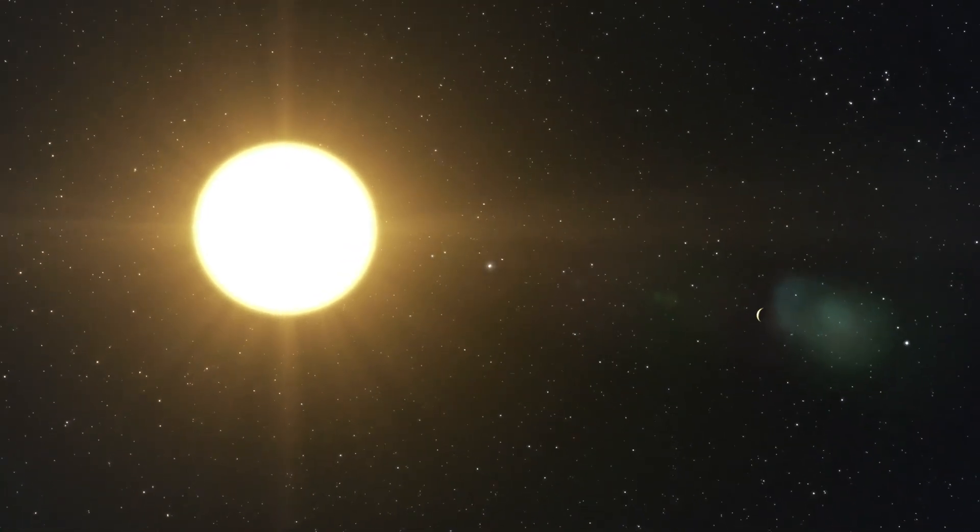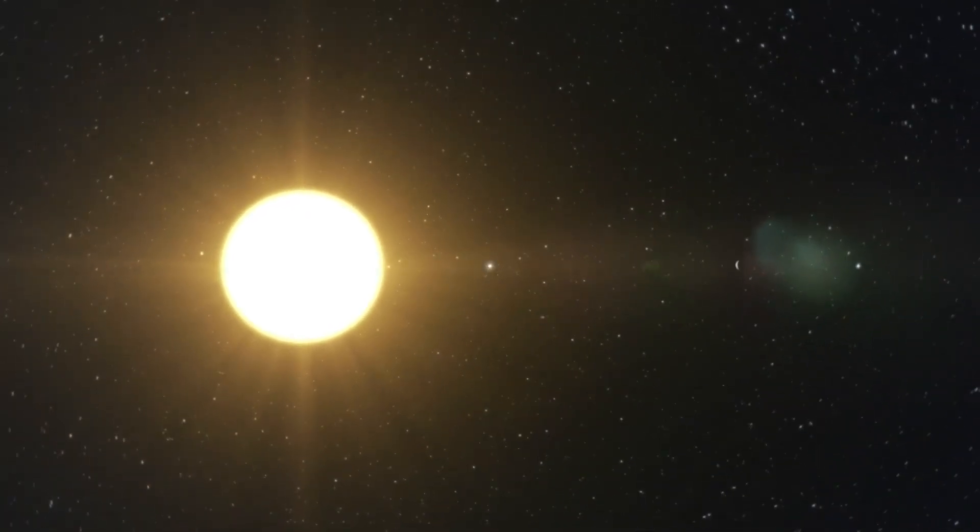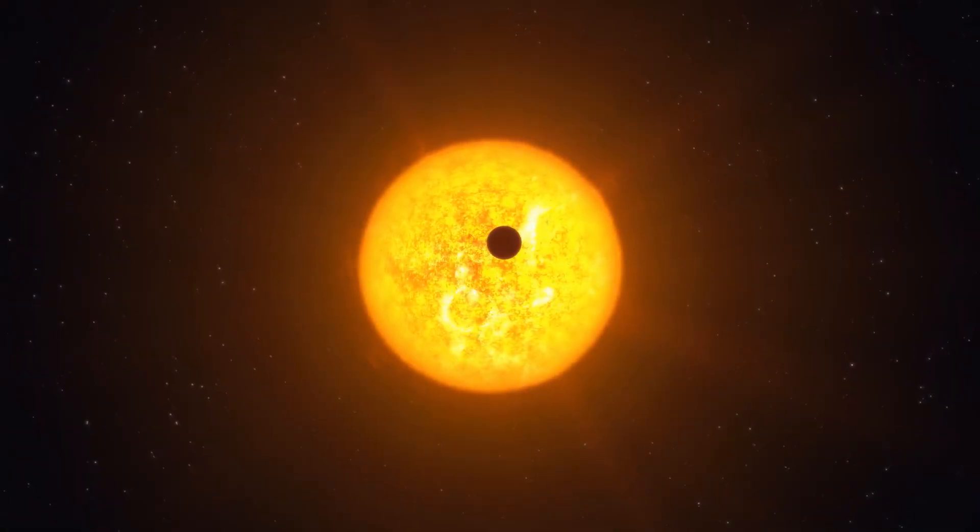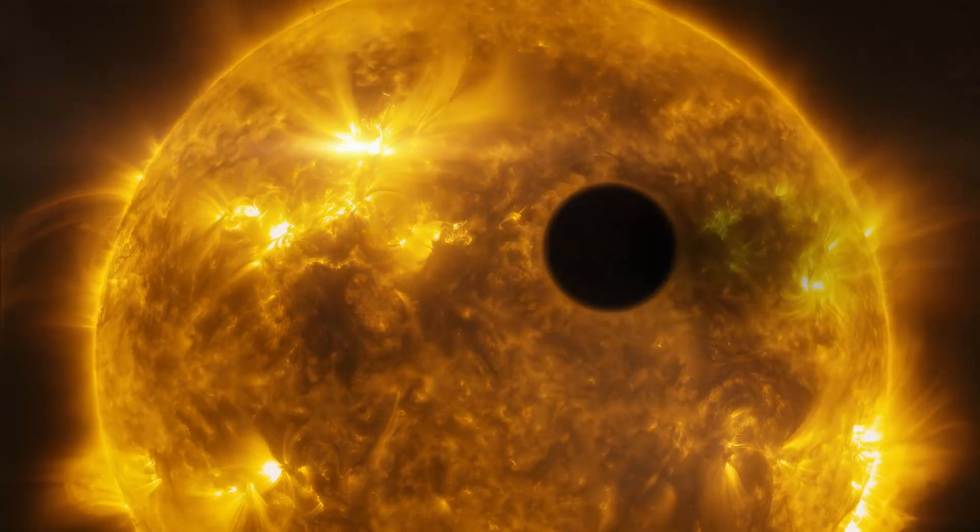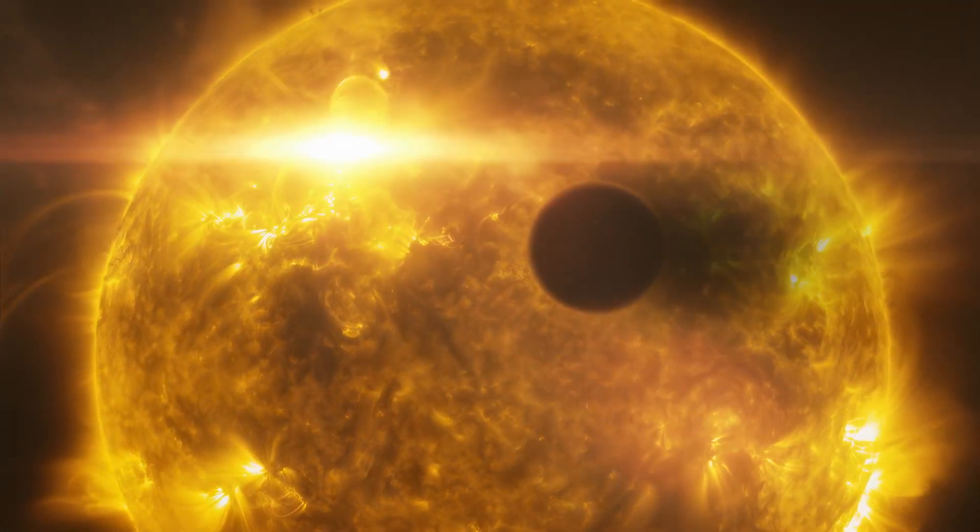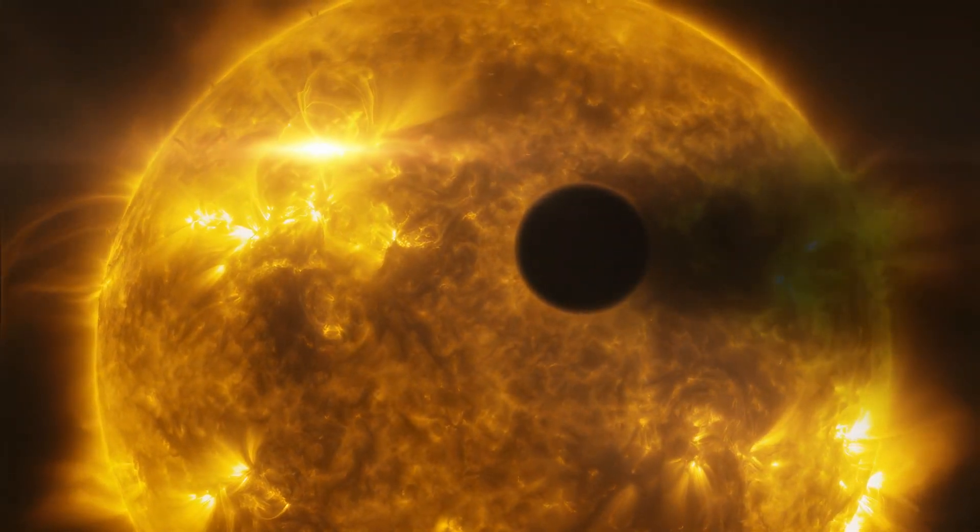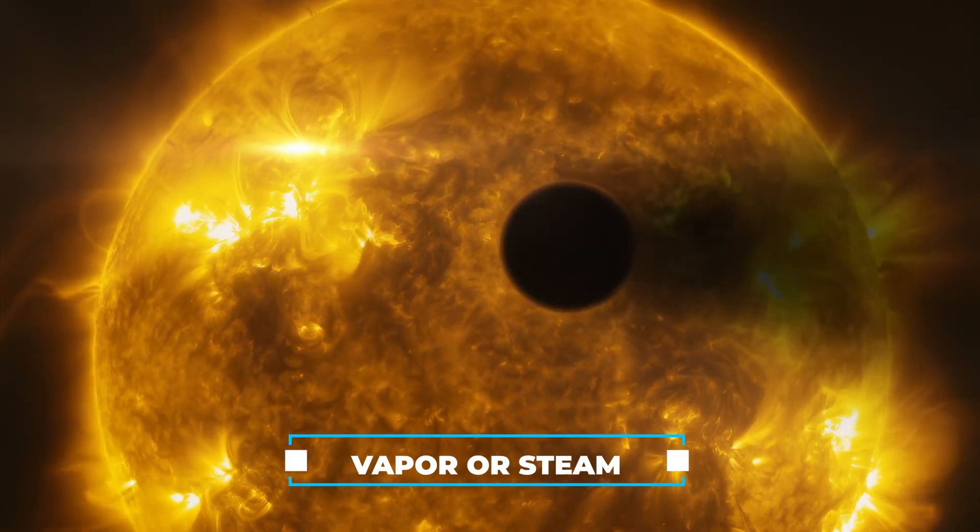It's a bit like that with planets and their distance from a star. If a planet gets too close to a star, it gets extremely hot. The heat becomes so intense that it causes any water on the planet's surface to turn into vapor or steam.